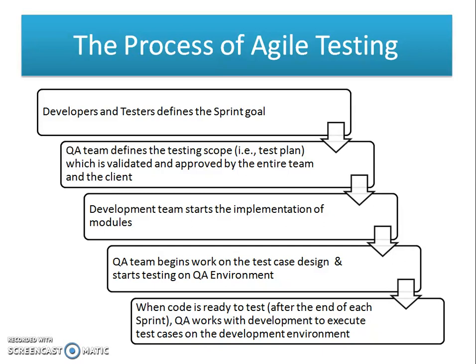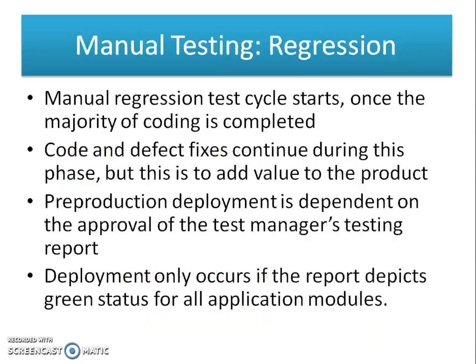Important elements of Agile testing include testers and QA managers as members of the Agile development team. For manual regression testing, once the majority of code is completed — in the last planned sprint — the manual regression test cycle starts. Coding defect fixes continue during this phase to add value to the product. For pre-production deployment, deployment is dependent on the approval of the test manager's testing report. Deployment only occurs if the report shows green status for all application modules.